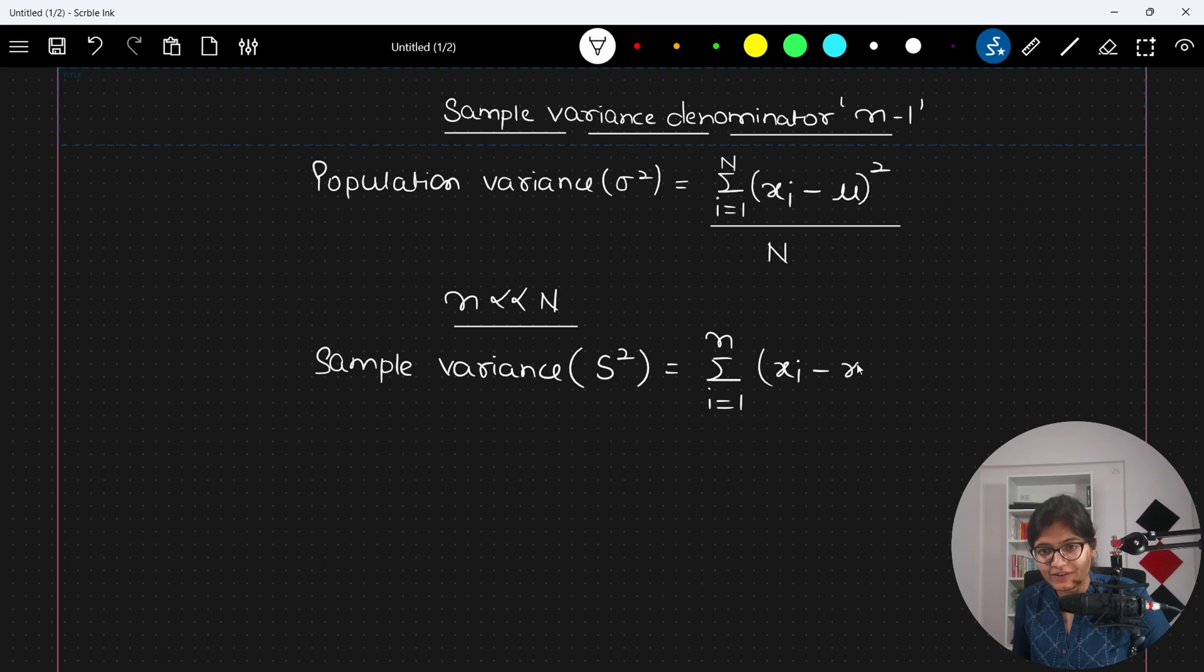Xi minus the value of X bar whole square divided by, in that case I am writing it as N minus 1. So here if you will observe very carefully, this mu indicates something which we call as a population mean. Whereas when I am calling X bar, it indicates something we called as a sample mean.